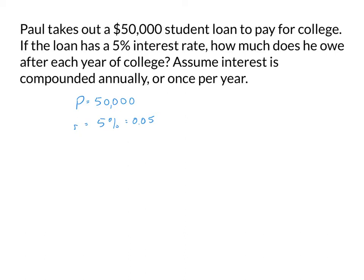The best way to set this up will be using a table where the first column is the years that have passed, and the second column is the amount owed after each year. We'll let our years be 0, 1, 2, 3, and 4. We start at year 0 because at year 0 when this loan begins, we owe $50,000.